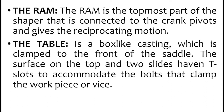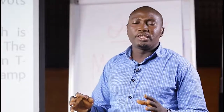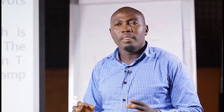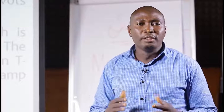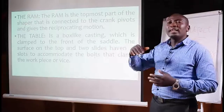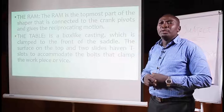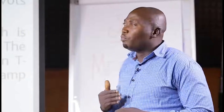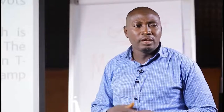The ram is the topmost part of the shaper that is connected to the crank pivots and gives the reciprocating motion. The shaping machine operates on the principle of reciprocating motion. The ram moves forward and backward — this forward and backward movement is what we refer to as the reciprocating motion.